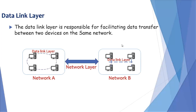For data transfer from network A to network B, we need network layer. But for data transfer between two devices on network A, we need only data link layer.